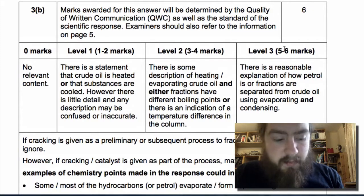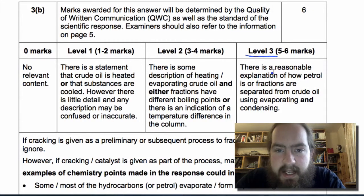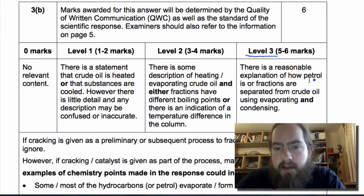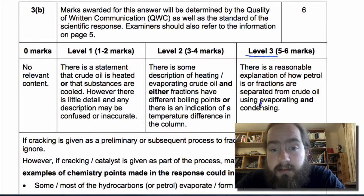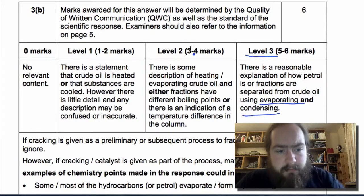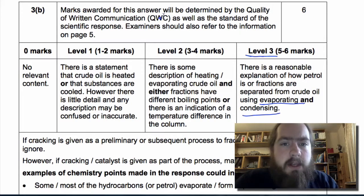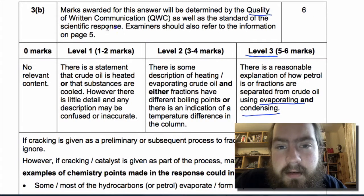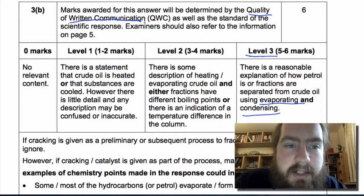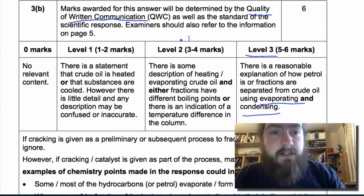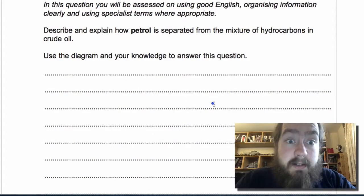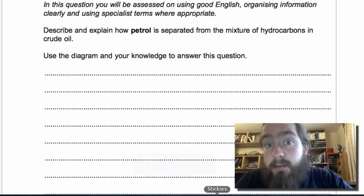Okay, now to get six marks we're expected to get a level three answer. This means you need a reasonable explanation of how the petrol is separated from the other fractions in crude oil using both evaporating and condensing. You also need to have a certain quality of written communication. That means there's lots of ways you can get those six marks as long as you've written in good English. We're going to plan our answer first and then we're going to use that to help us write the answer.